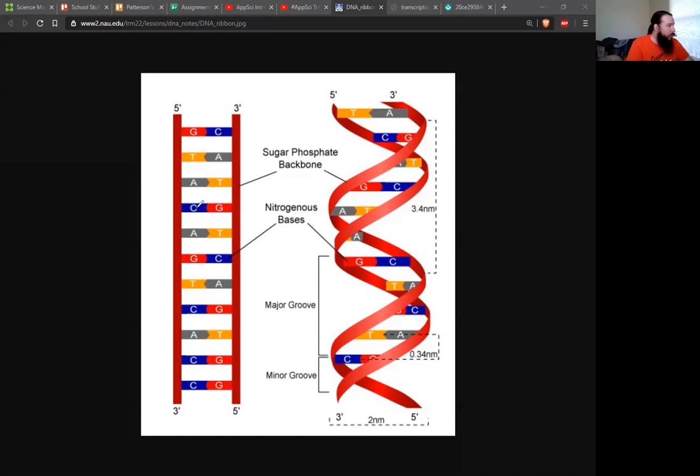We got A, T, C, and G. Those are the only letters we can use. In the order of the letters, that's what actually codes the instruction.